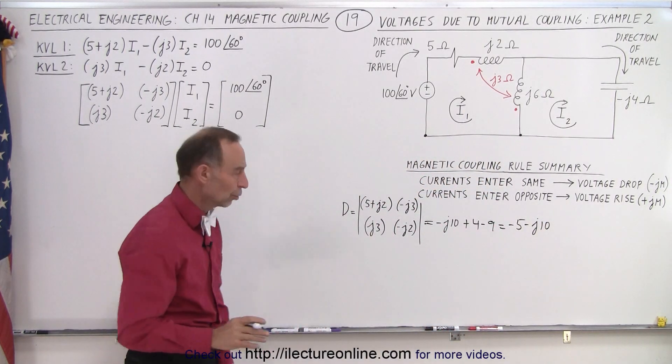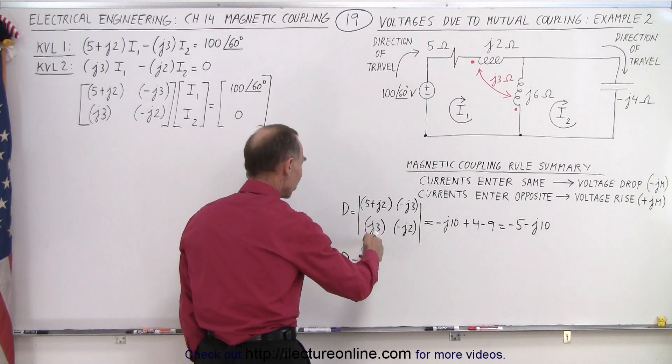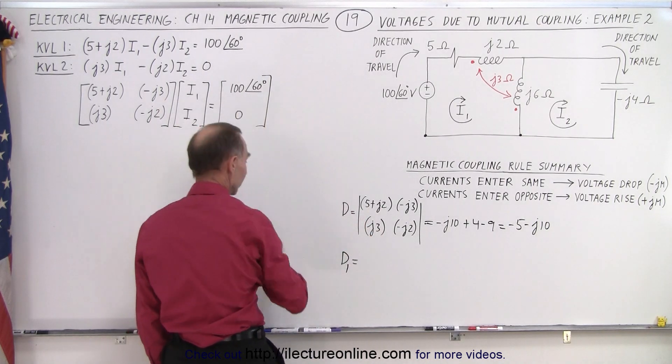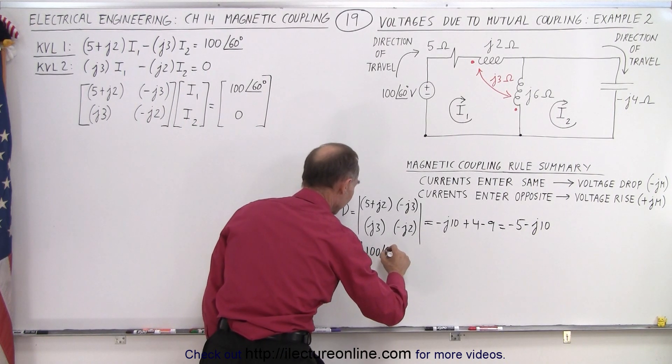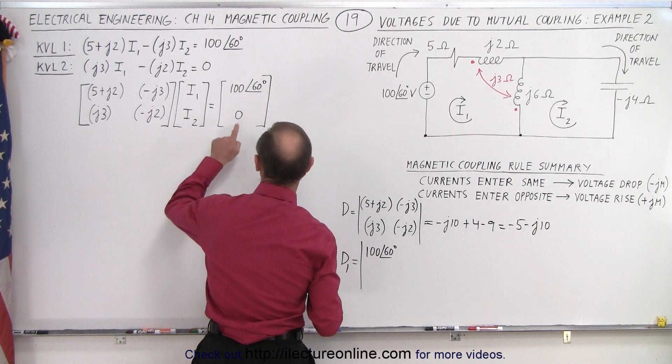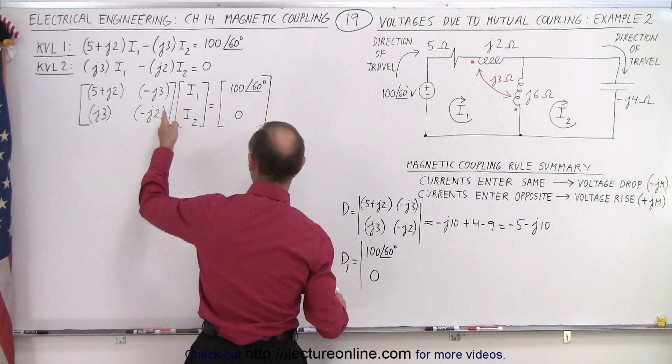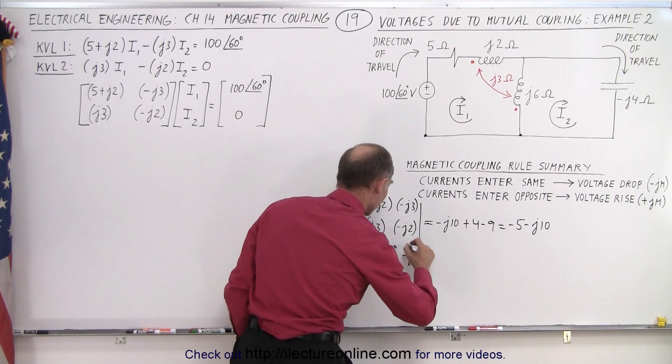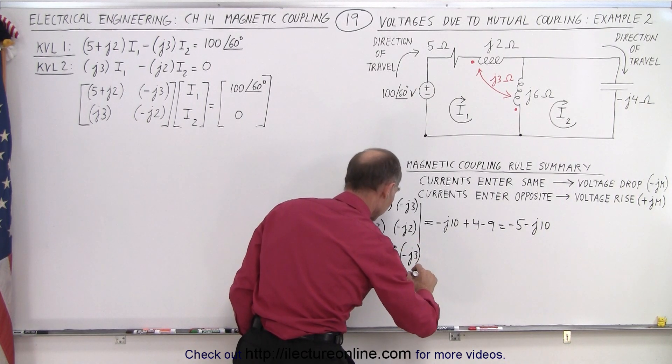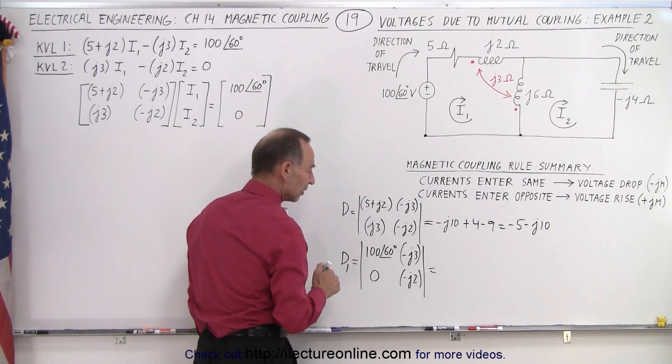Now we find the D1 determinant, which means we take the first column and replace it with this. So we have 100 with a phase angle of 60 degrees. We have 0, that always makes it nice when we have 0. And then we still have the second column, we have the minus J3, put parentheses around it, and a minus J2. Notice this product here becomes 0, we only have to worry about these two right here.